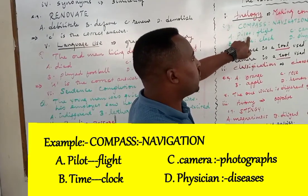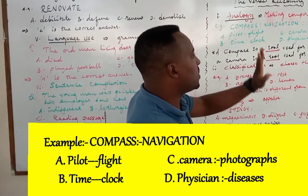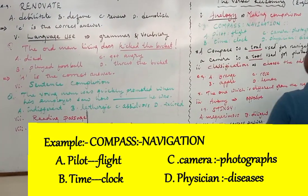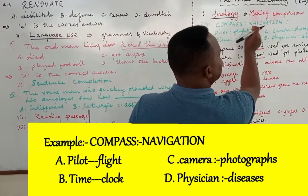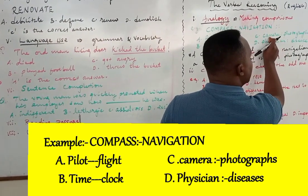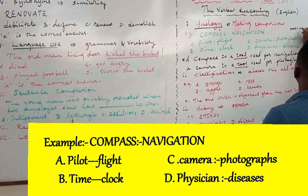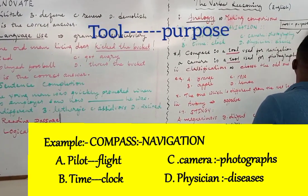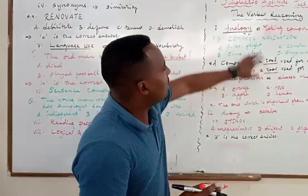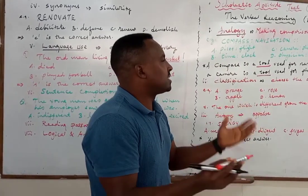So apply the same sentence to the rest of the pairs. Is a pilot a tool for flight? No. Is time a tool for clock? No. Is a camera a tool used for photography? Yes — now there is a relation. The relation between compass and navigation is the same as the relation between camera and photography. It's a tool-and-purpose relation. So you deal with analogies this way. Once you construct a sentence or work out the relation, it's very easy.